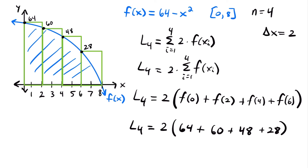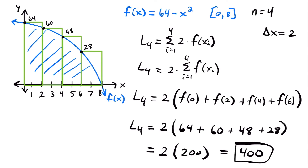Simplifying, we have 2 times 200 — that's what 64 plus 60 plus 48 plus 28 equals — which gives us 400. So 400 is the approximation of the area under this curve using rectangles with left endpoints.